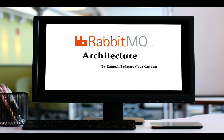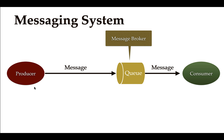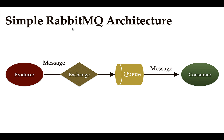In this lecture we'll look at RabbitMQ architecture. In a typical messaging system, we have a producer, a consumer, and a message broker in between. The producer sends a message to the broker and the consumer reads those messages from it. In RabbitMQ, there is one additional component called exchange — the producer sends a message to the exchange, which routes it to the queue, and then the consumer reads from the queue.